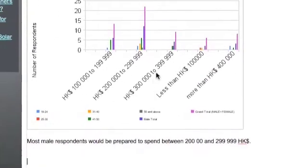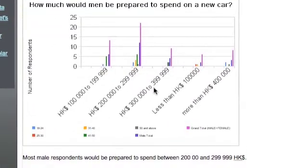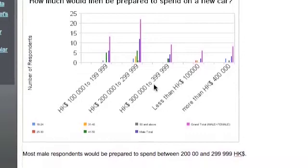We have an alternative way of getting our information into our Google site. The method we've just looked at is a simple image — it just pastes an image in there. But we can actually produce a live version, an interactive version of the spreadsheet and put that on our page as well.